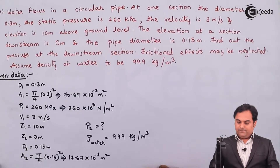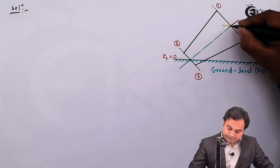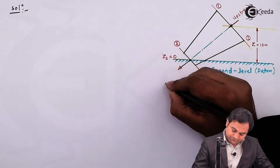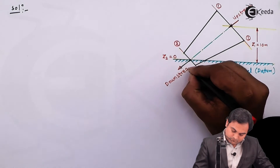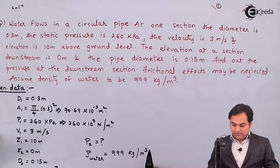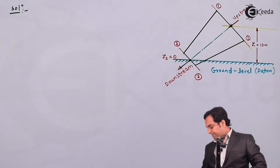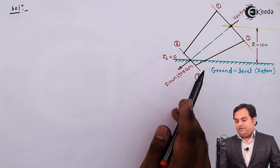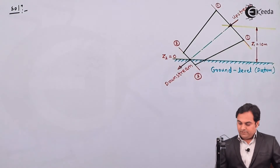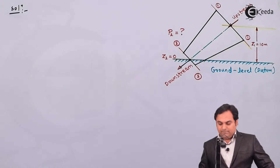The elevation at the downstream section is 0, so section 2 is at ground level — the datum. Flow comes from the upstream direction where section 1 is located, downward to the downstream section 2. The pipe diameter at the bottom (section 2) is 0.15 meter. So this is a tapering pipe: larger diameter d1 = 0.3 meter at section 1, and smaller diameter d2 = 0.15 meter at section 2. We need to find pressure p2 at the downstream section using Bernoulli's equation.